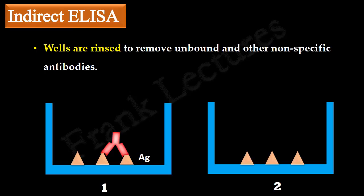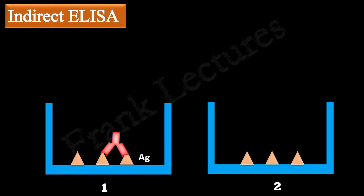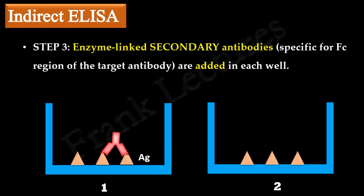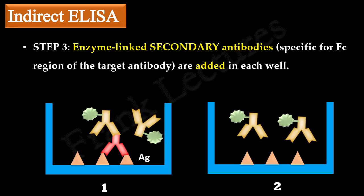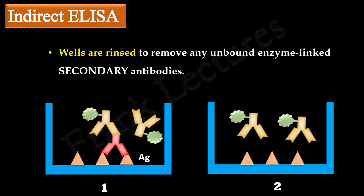The antibody binding directly to the antigen is the primary antibody. In the third step, enzyme-linked secondary antibodies are added in each well. Recall that these secondary antibodies have antigen binding sites for the Fc regions of the primary antibody. Thus, they bind to the primary antibody present in the first well. Since no primary antibody is present in the second well, the secondary antibodies added in this well will remain free or unbound. Wells are rinsed again to remove any unbound secondary antibodies.